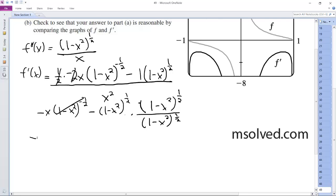so what I end up with here. So negative x squared minus 1 minus x squared over x squared, and then 1 minus x squared raise to 1 half.